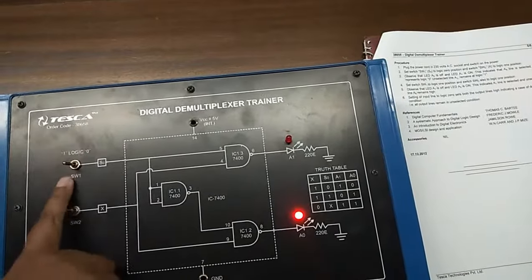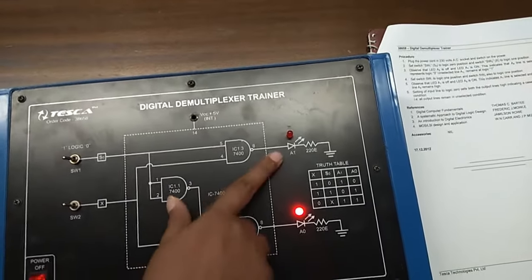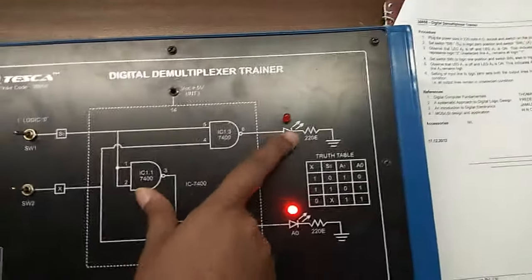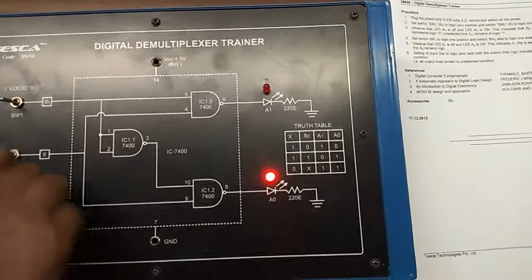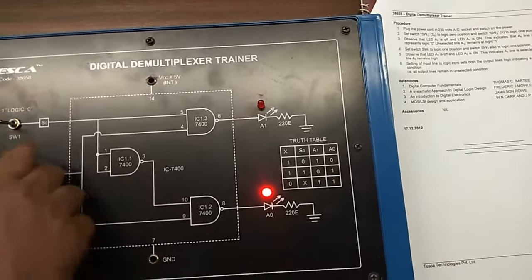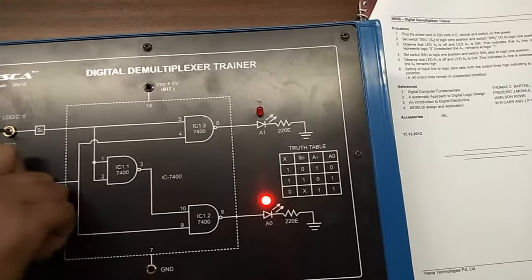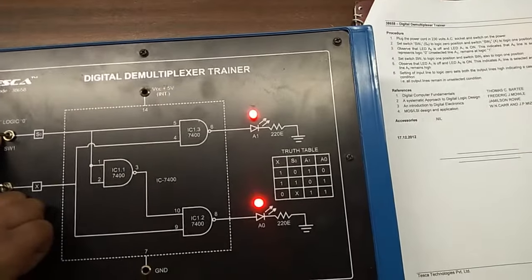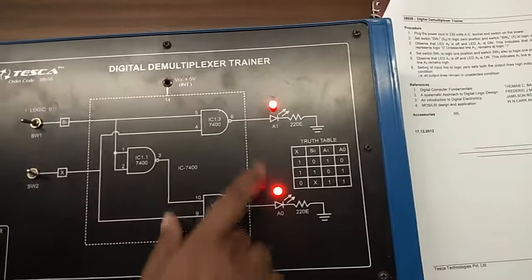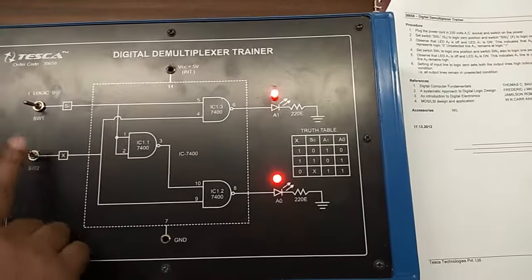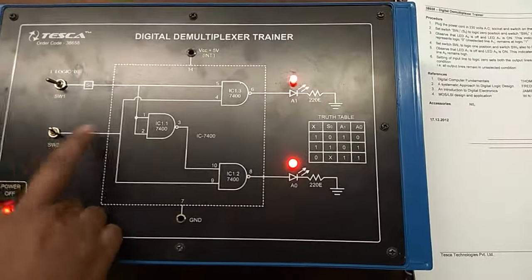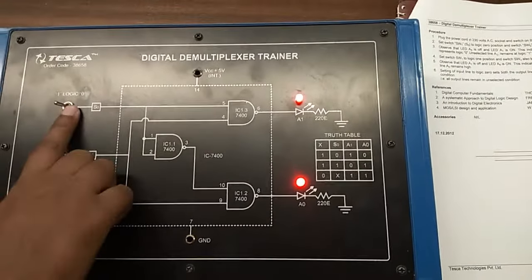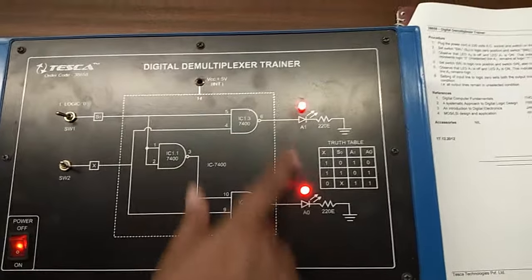Now I am setting both to 1, and A1 is 0 and A0 is 1. Now I am setting this to 0 and this to 1, and both LEDs are on.